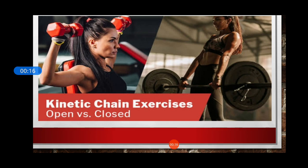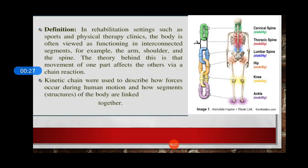The kinetic chain in the engineering sense are composed of a series of rigid links that are interconnected by a series of pin-centered joints. The system of joints and links is constructed so that motion of one link at one joint will produce motion at all of the other joints in the system in a predictable manner. The kinetic chains could be open or closed kinetic chain.